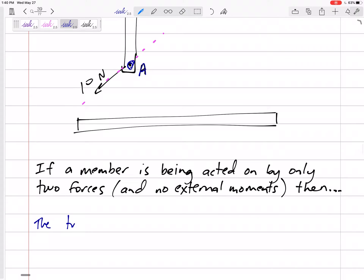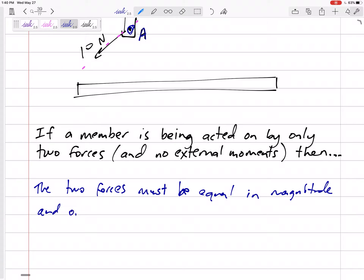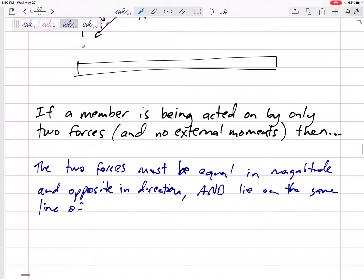The two forces must be equal in magnitude and opposite in direction and they must lie on the same line of action. So if they lie on the same line of action, then that line of action would be the line that connects the two forces.